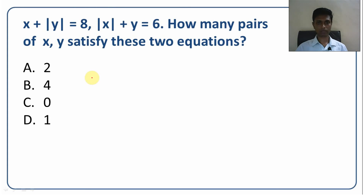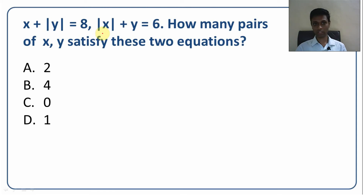It is a very interesting question on linear equations: x plus mod y is 8, and mod x plus y is 6. How many pairs of x, y satisfy these two equations? It looks like a simple question, but instead of just having x and y, we have x plus mod y and mod x plus y. It is a tricky question — the mod completely changes the dynamic.